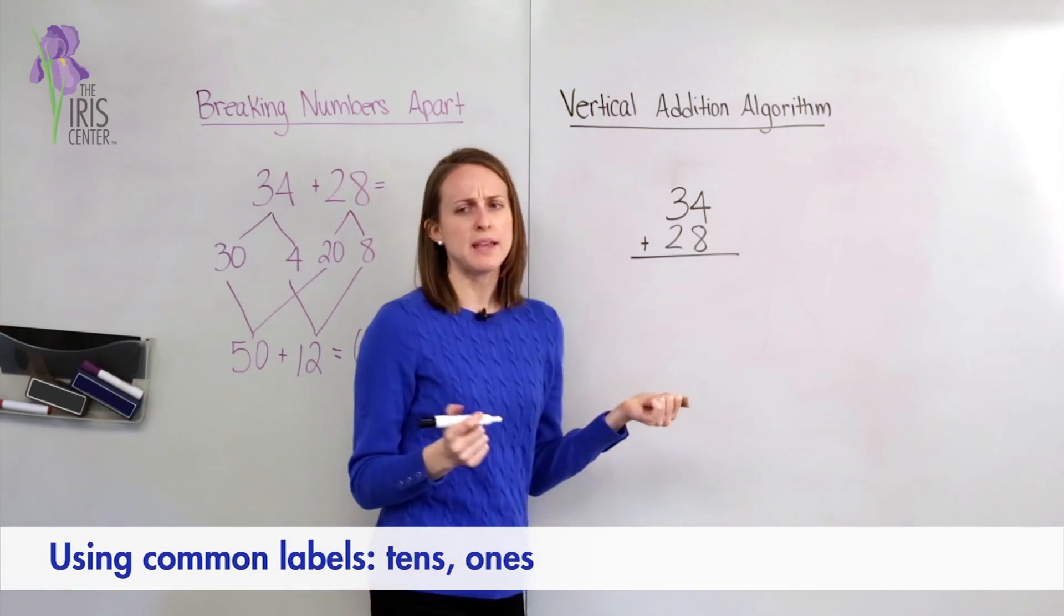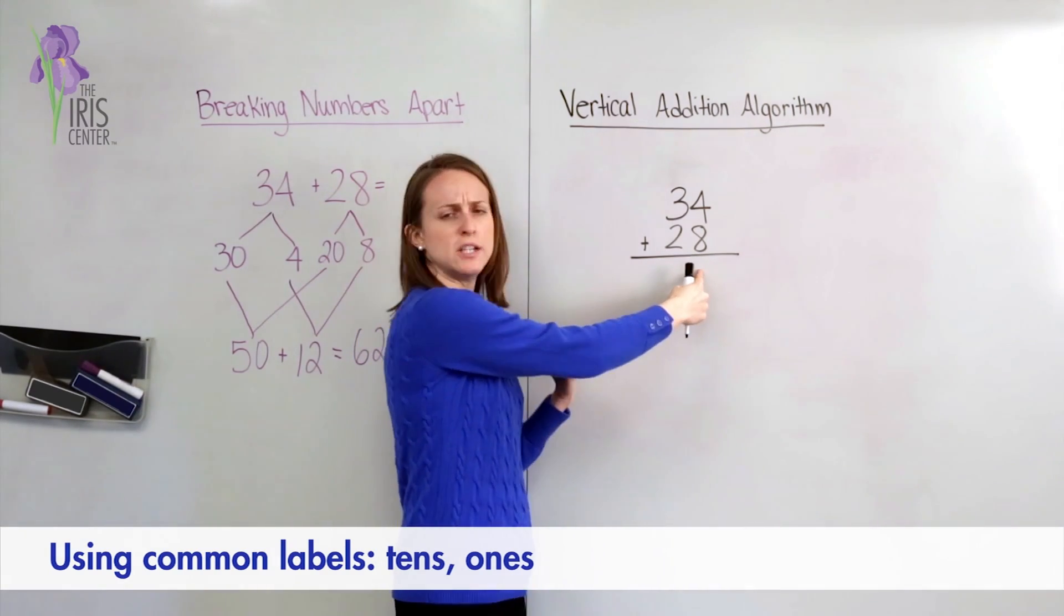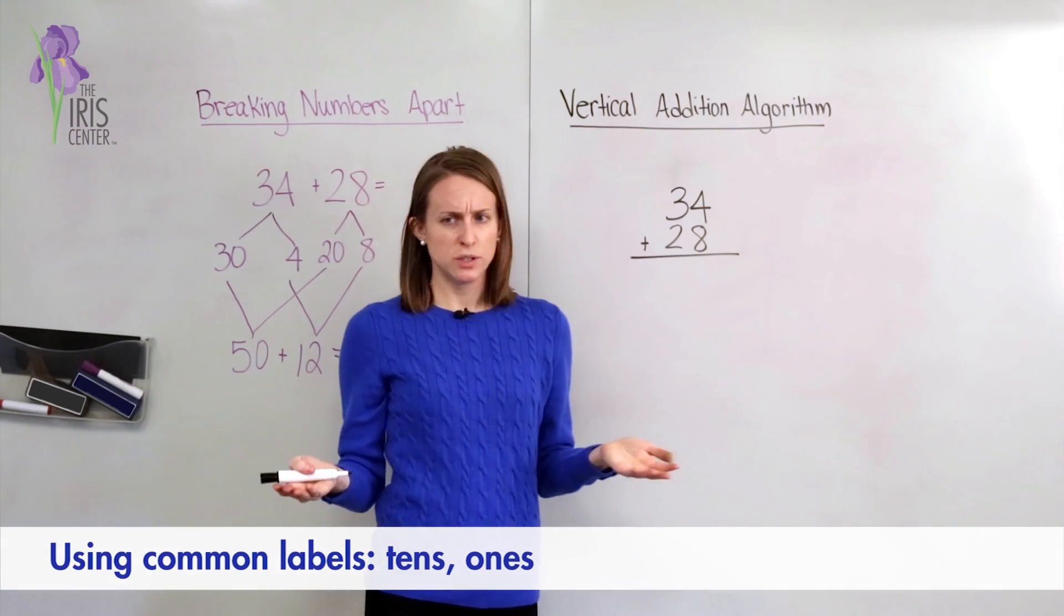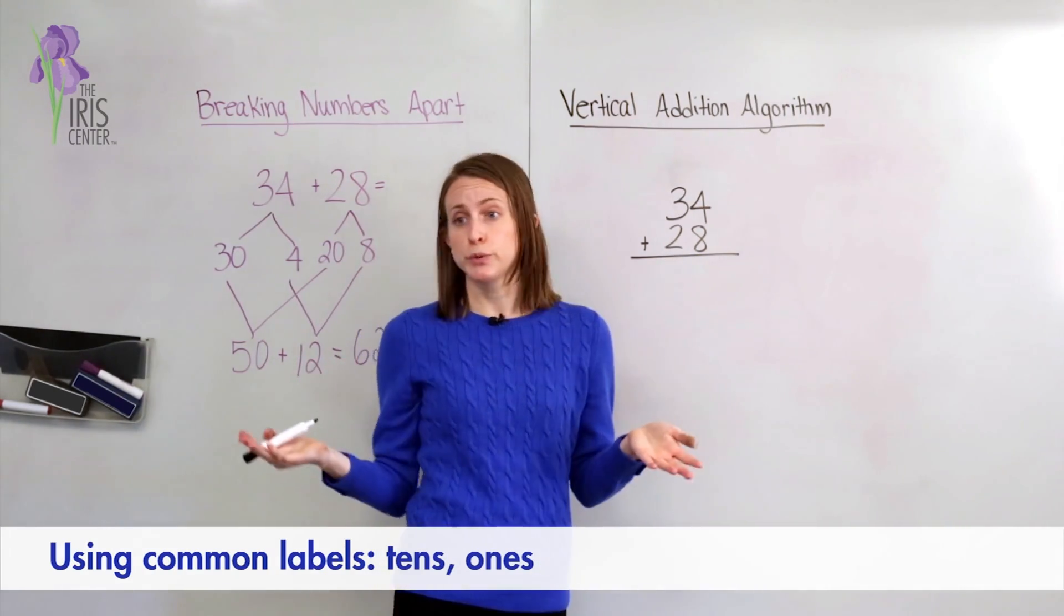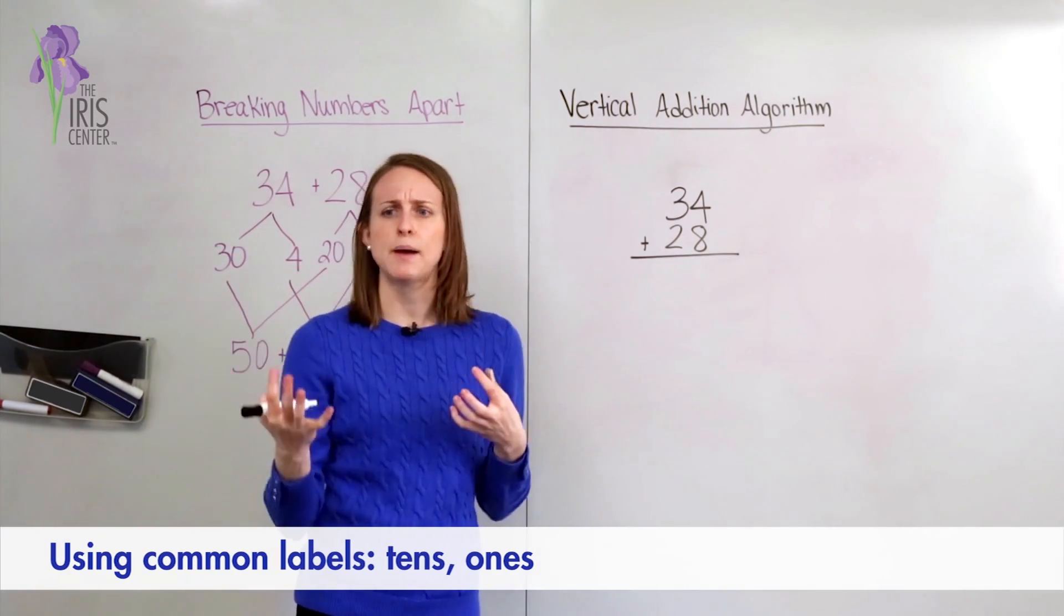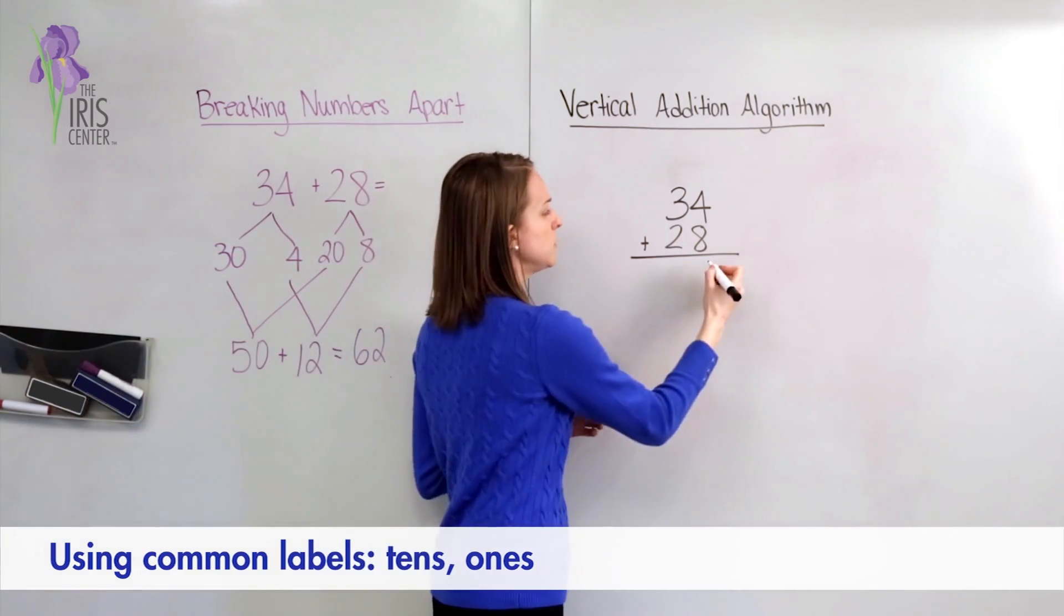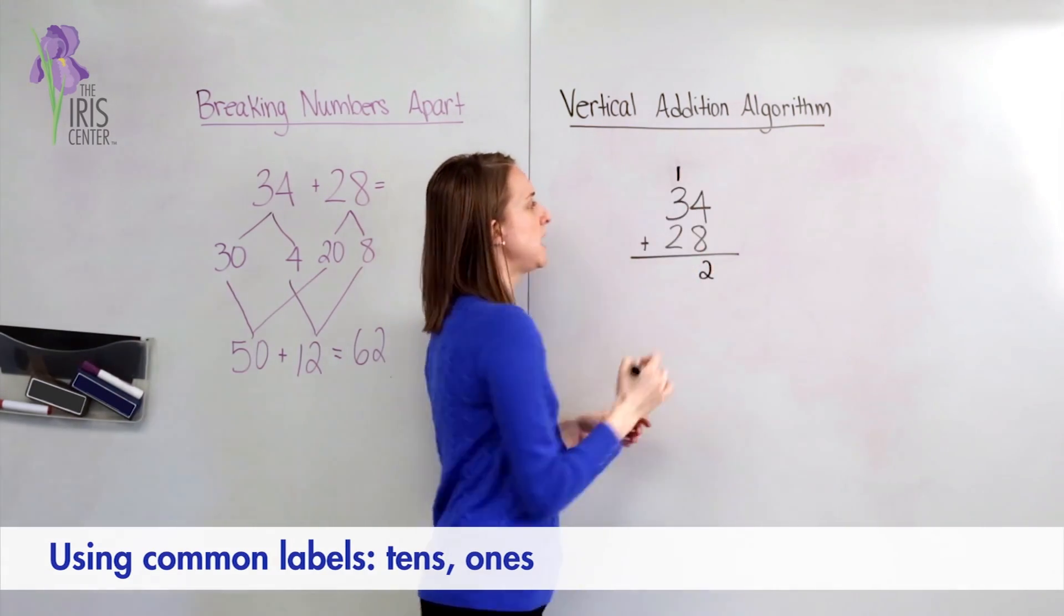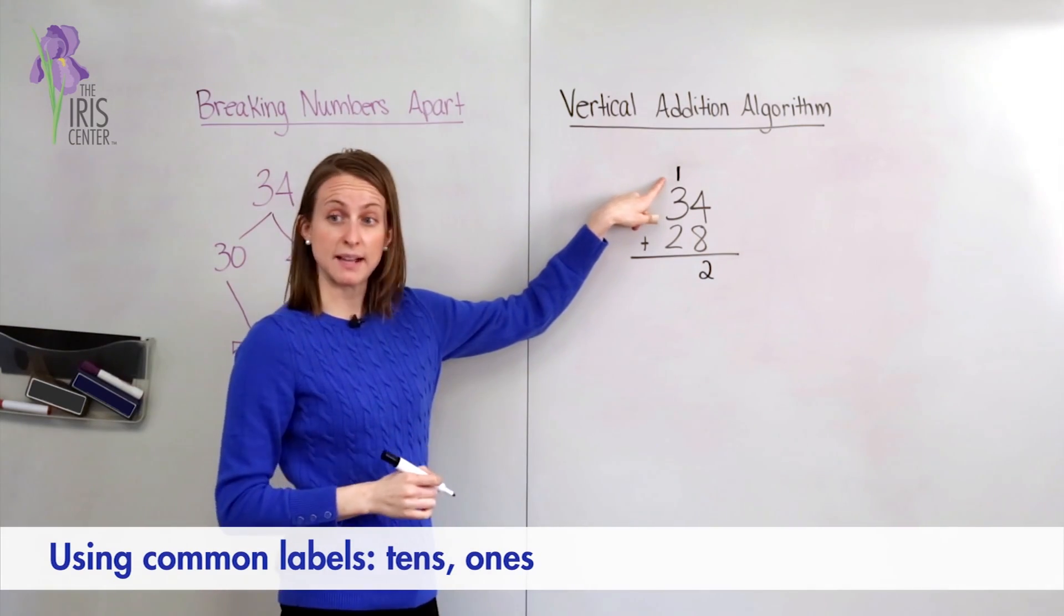And when I'm solving with the algorithm, I need to think only one digit can go here under my ones column, and 12 is a two-digit number. So I need to regroup. And regrouping means I'm thinking about how many groups of tens I have and how many ones I have. So with the number 12, I know I have two ones, and I know I have one group of 10.